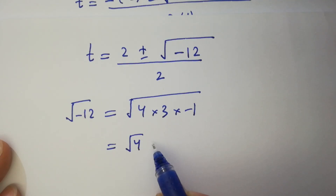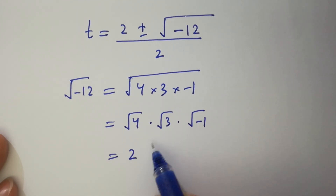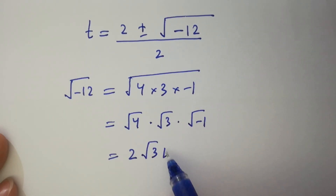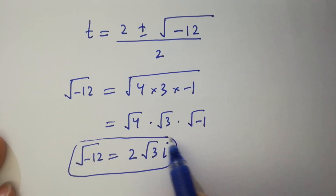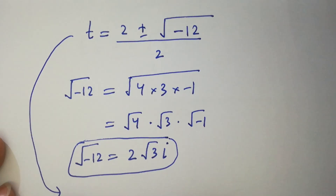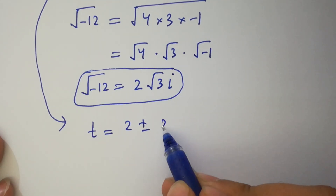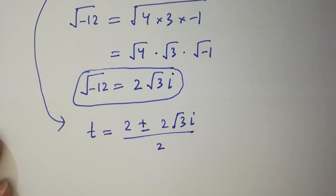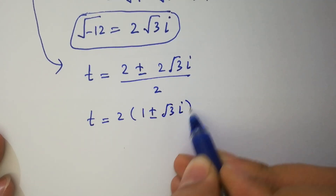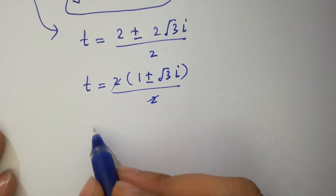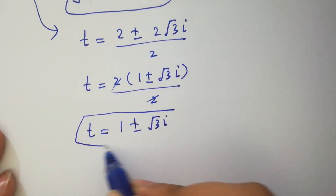√(−12) can be written as √4 · √3 · √(−1) = 2√3·i. So t = (2 ± 2√3·i) / 2. Cancelling the 2, we get t = 1 ± √3·i. So we have 2 complex solutions here.